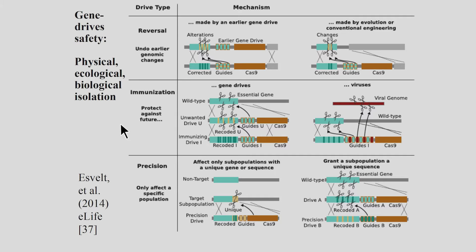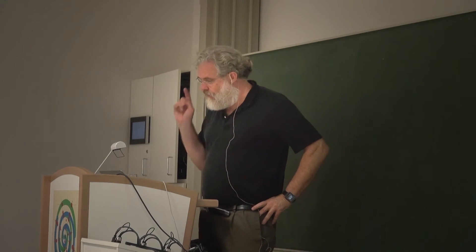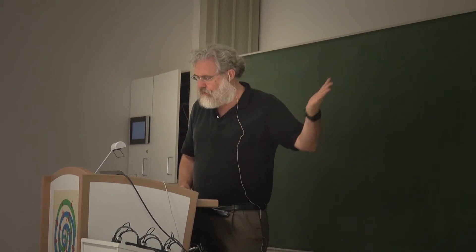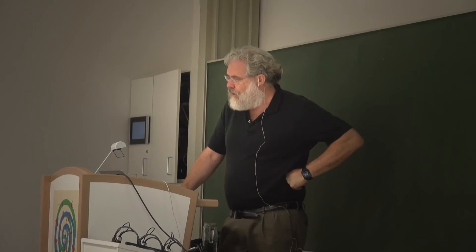We proposed in the eLife paper and have now proven a variety of containment strategies in the lab: physical, ecological, and biological isolation. Keeping Cas9 separate from the guide RNAs is a biological/genetic isolation. Physical isolation is obvious — you do it in a containment facility. Ecological isolation is also important: if you do an experiment on a flying insect with a broad range like Drosophila and it escapes, the gene drive can go throughout the world. But Anopheles gambii, which we work on at the Harvard School of Public Health, has no population outside the lab, so that's ecological isolation.